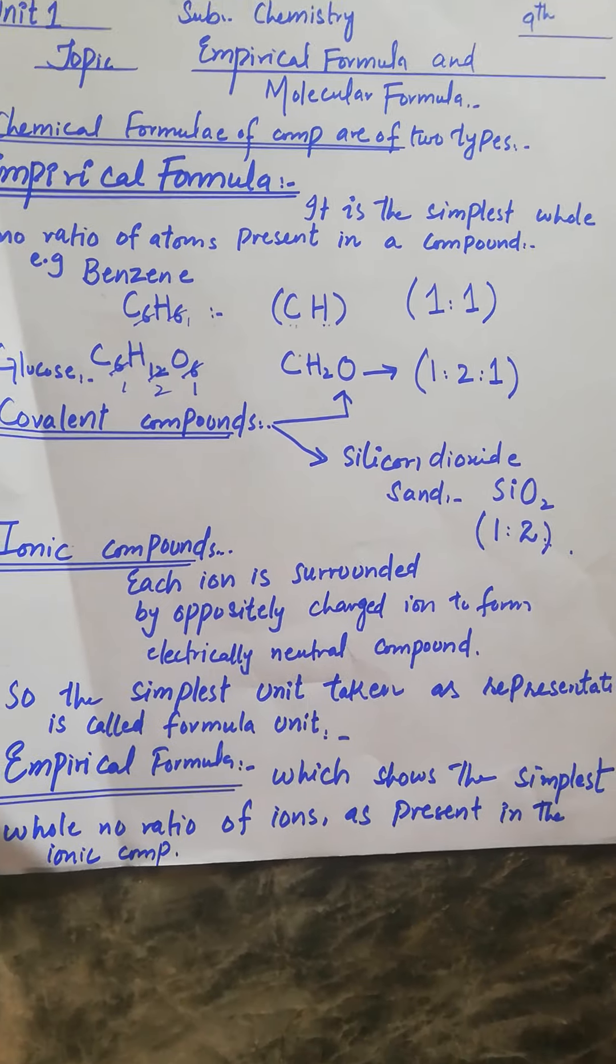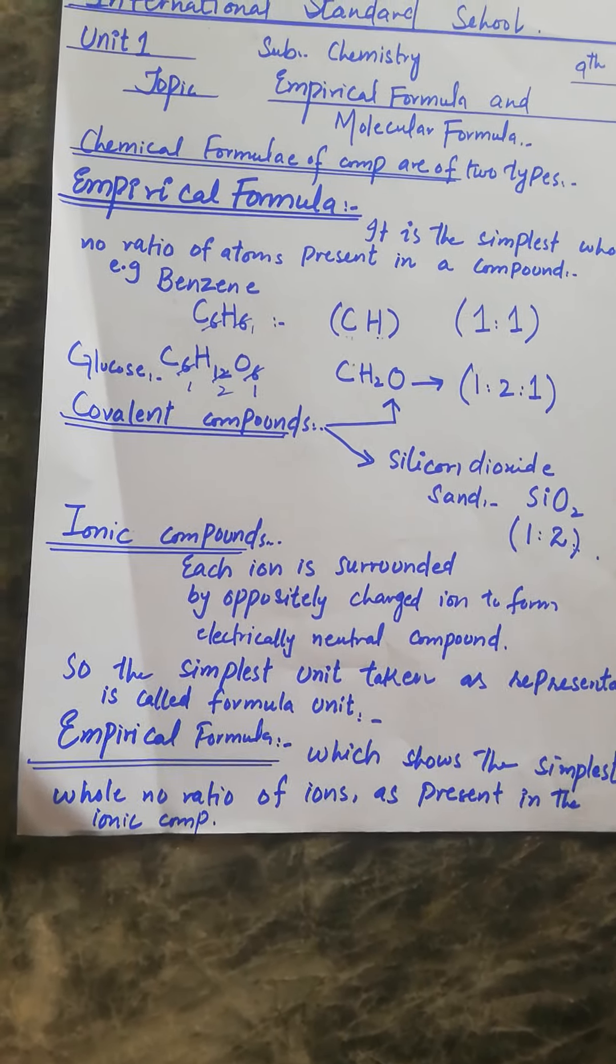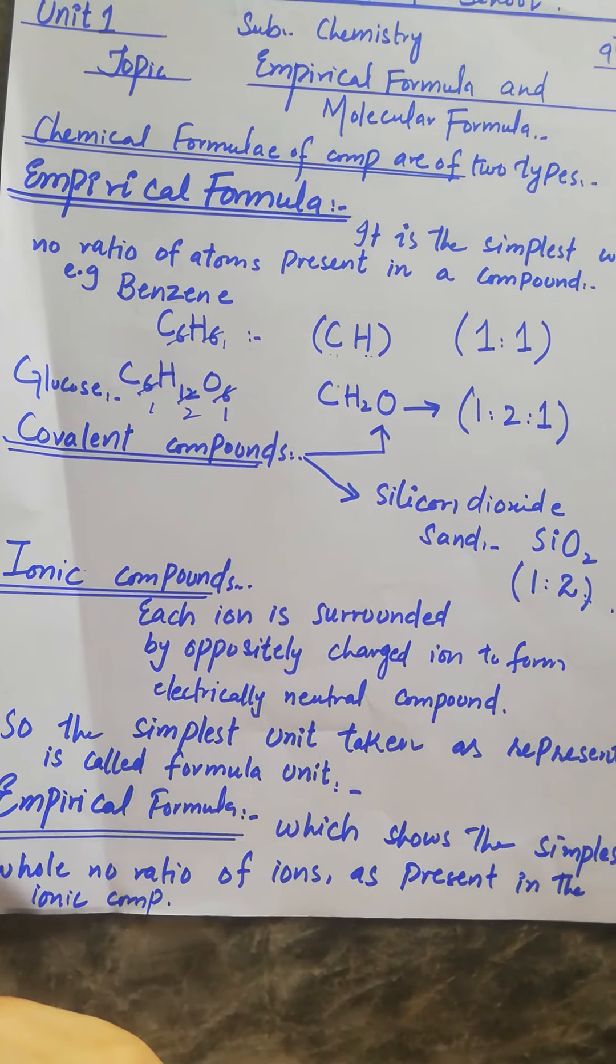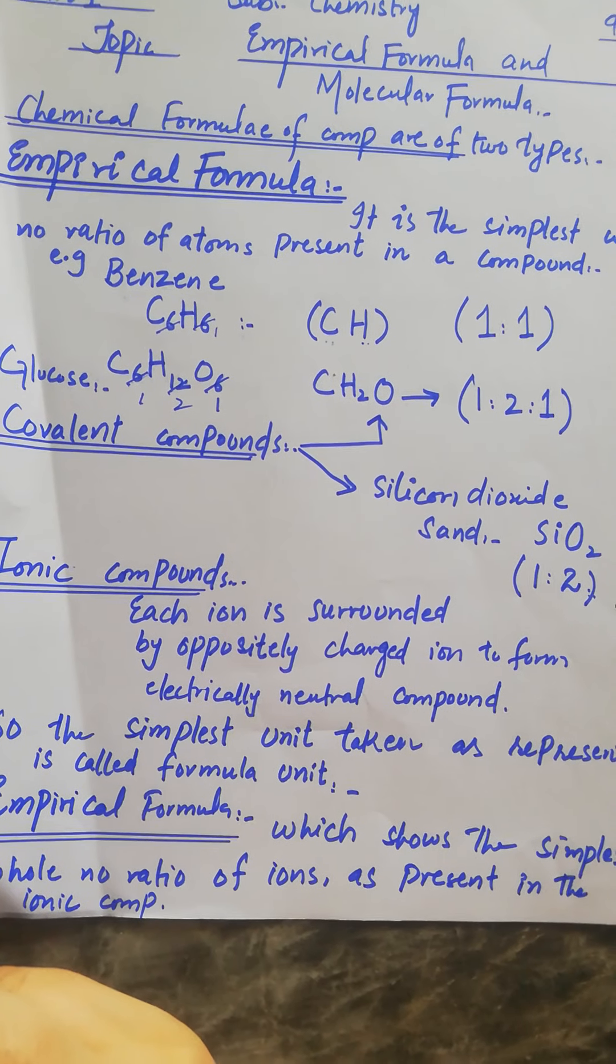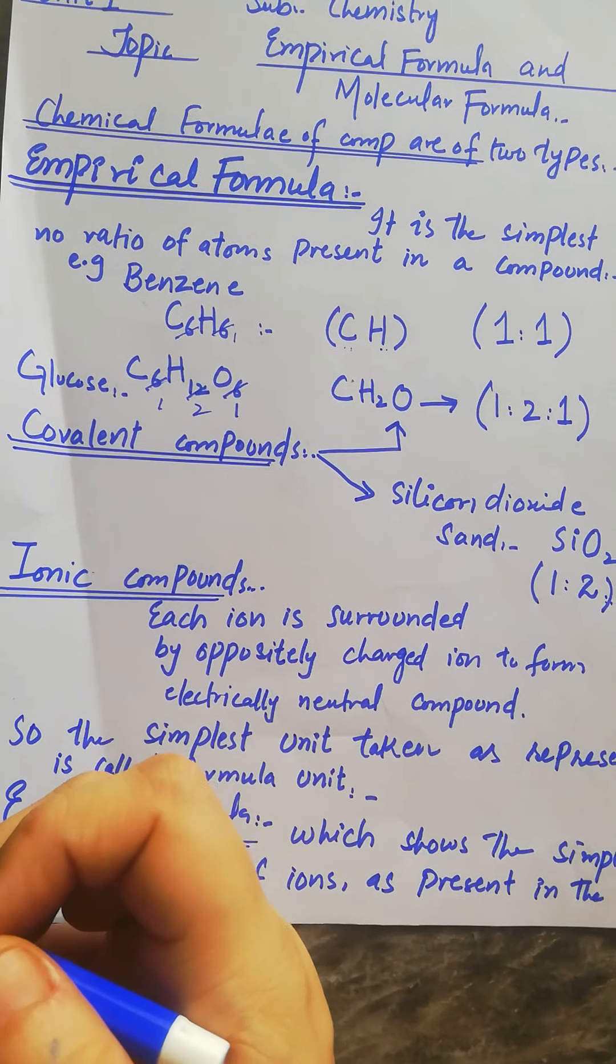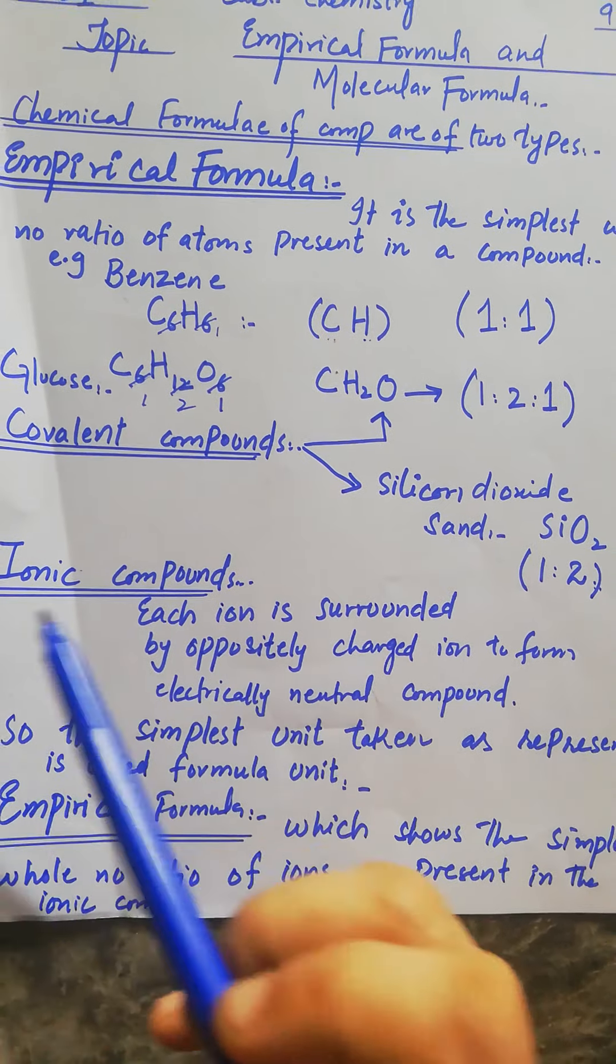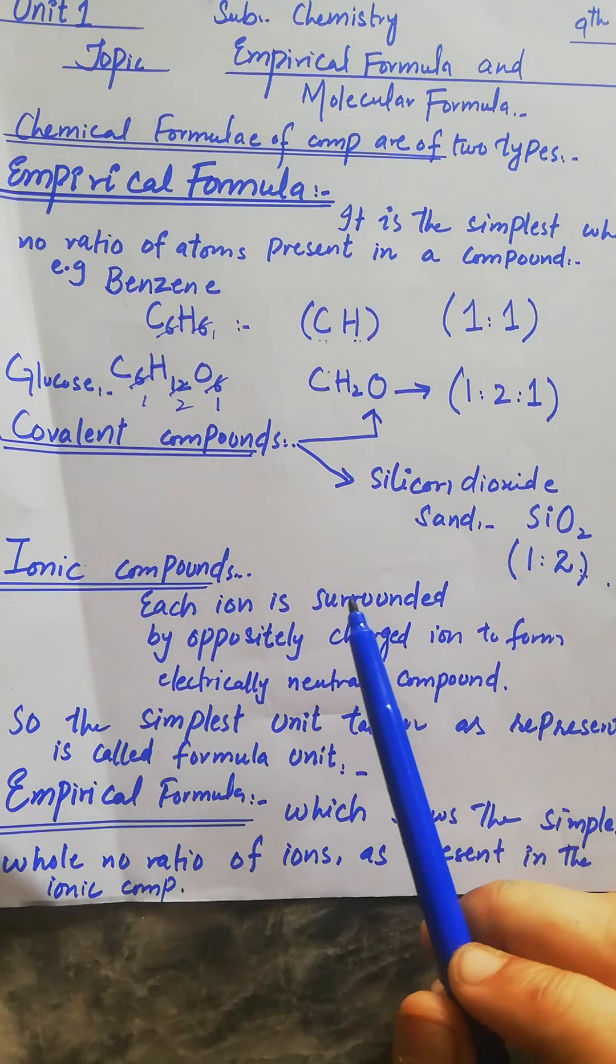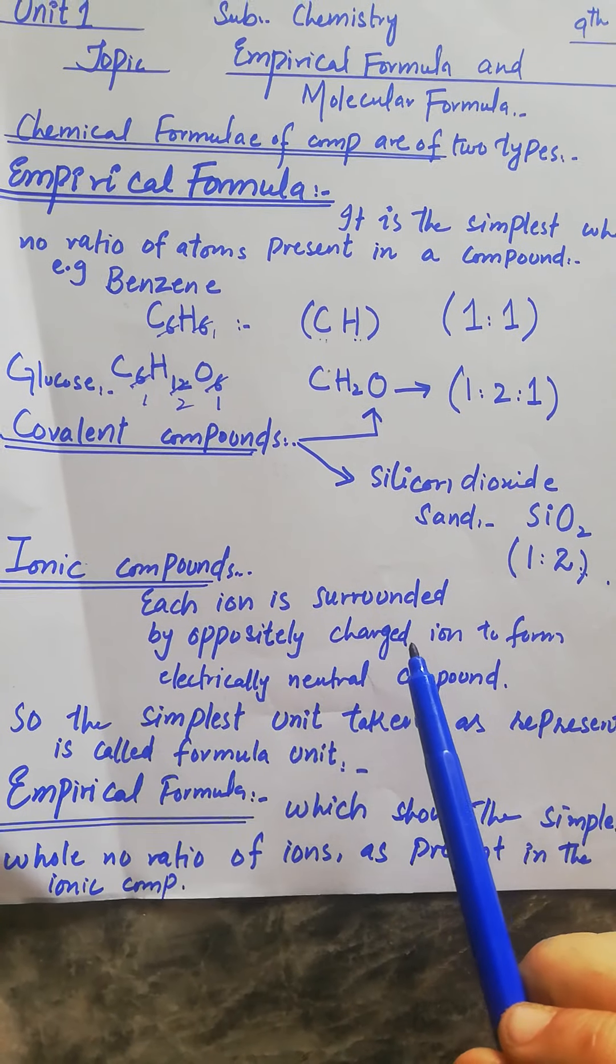Now we will discuss ionic compounds. Ionic compounds are formed by the combination of ions, and each ion is surrounded by an oppositely charged ion to form an electrically neutral compound.